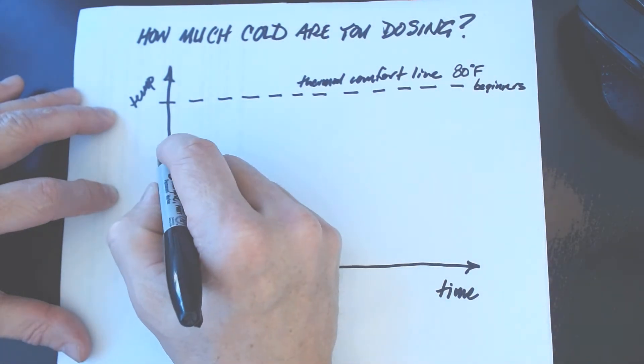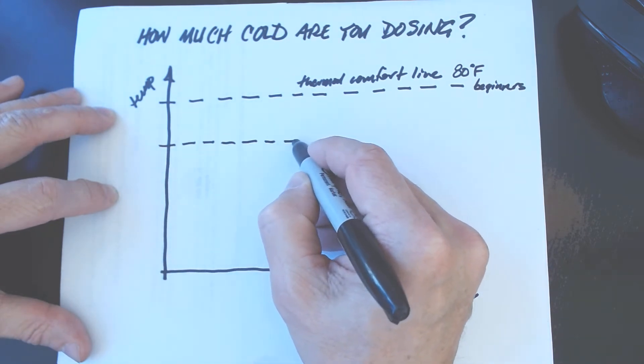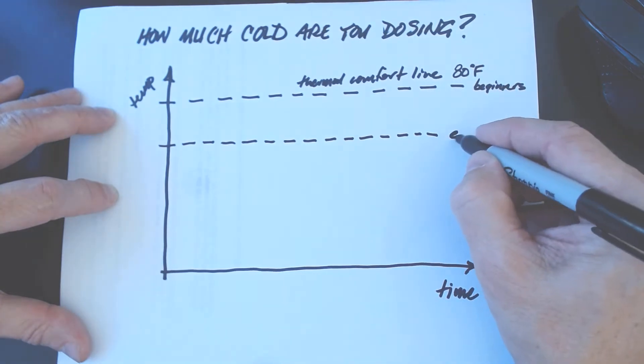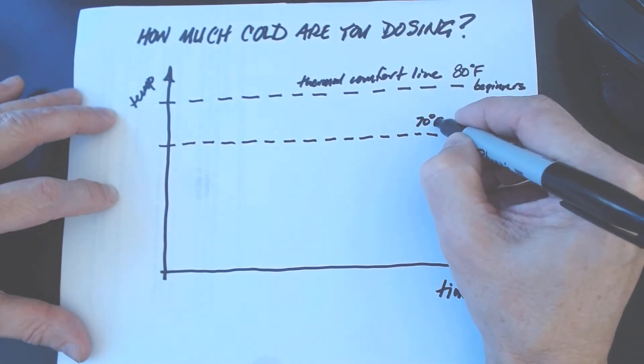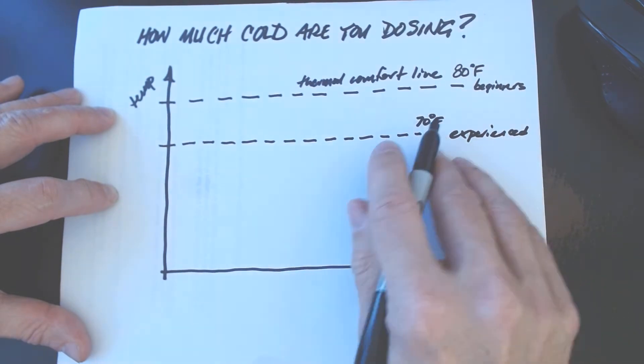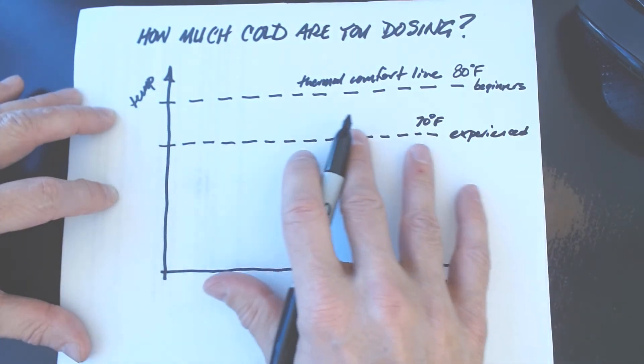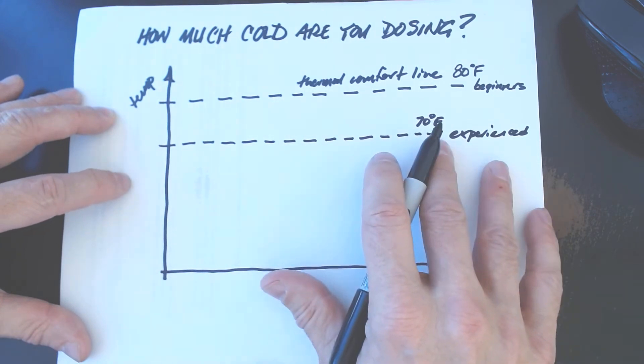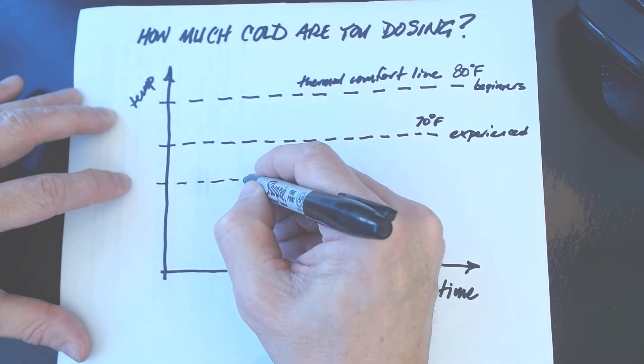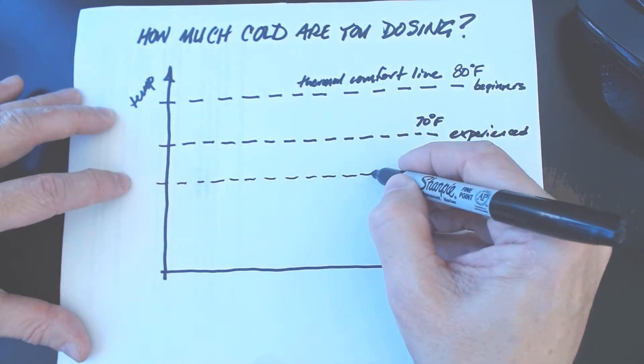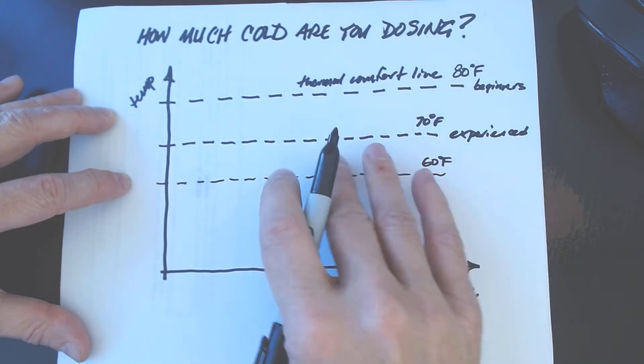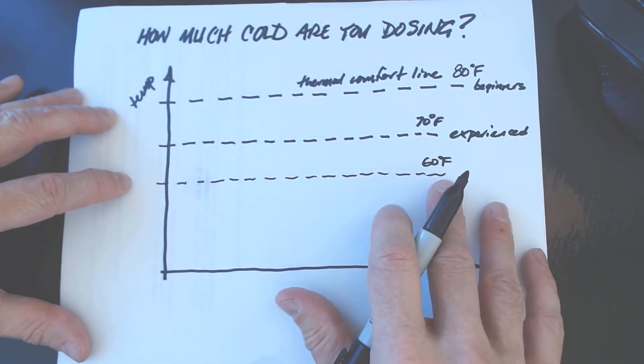But for people who are more advanced maybe they're more comfortable at 70 degrees Fahrenheit. Maybe because of their experience with deliberate cold exposure they can get into a 70 degree tub of water and feel neither warm nor cold. And perhaps for those people who are really expert because they've been doing this for a long time maybe their thermal comfort line is down at 60.